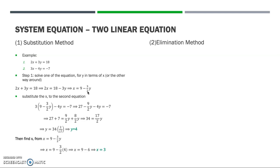The second method is elimination method. Using our previous example, first step we want to eliminate one of the variables by adding or subtracting a multiple of one equation from the other.